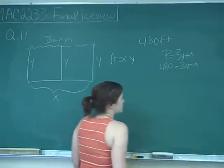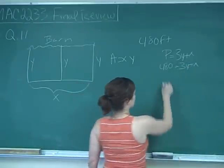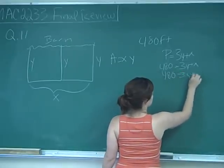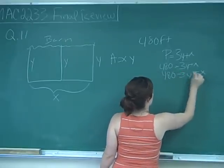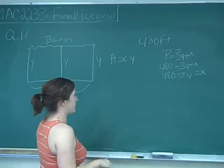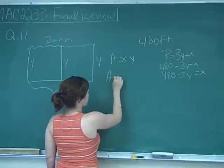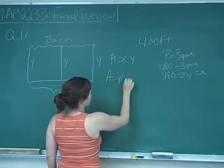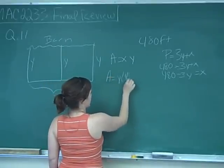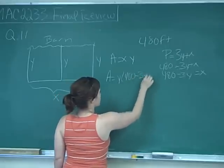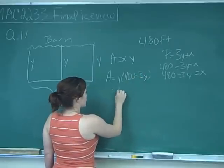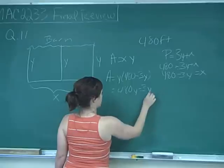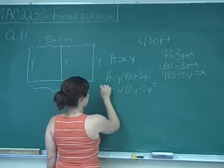We're going to solve for one variable — I'll solve for x — and plug it into our area equation. So the area equals y times (480 minus 3y), which gives us 480y minus 3y squared equals area.